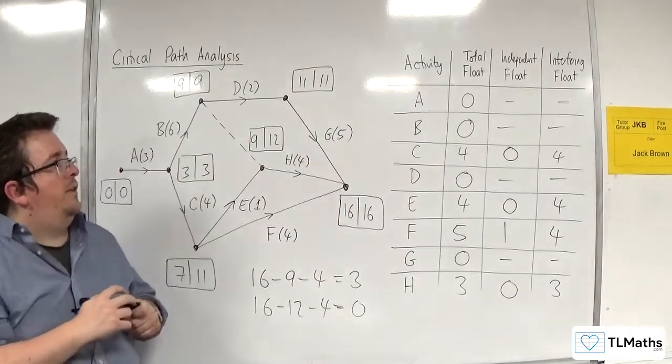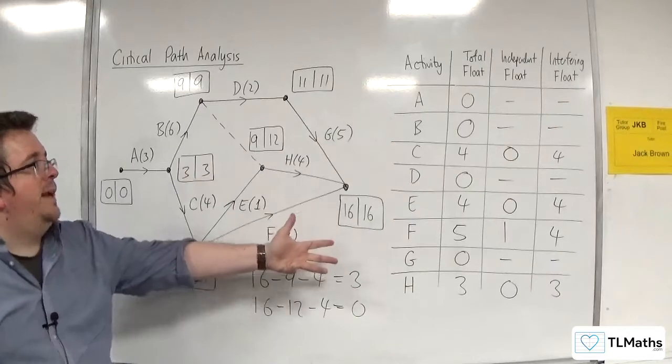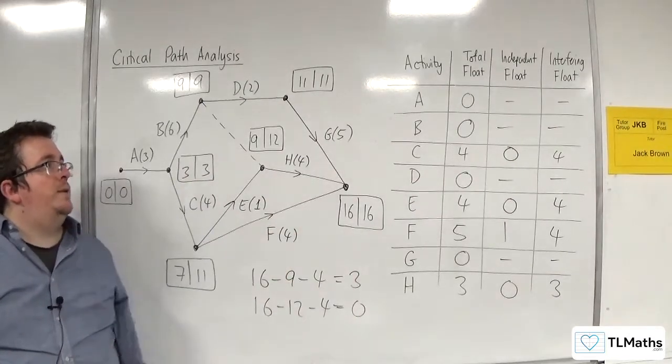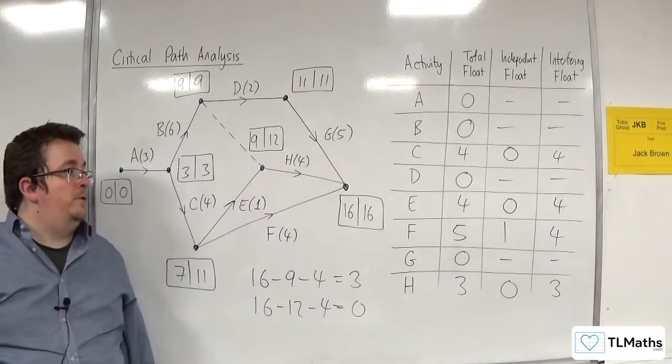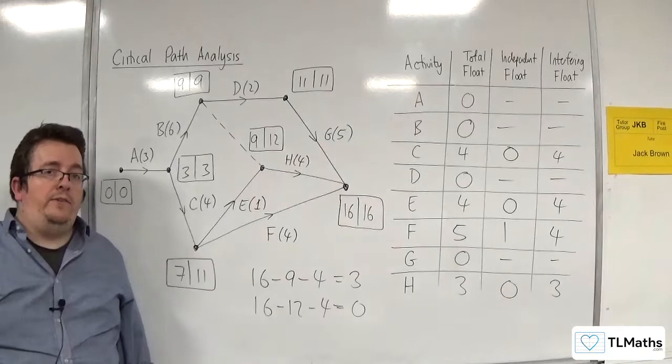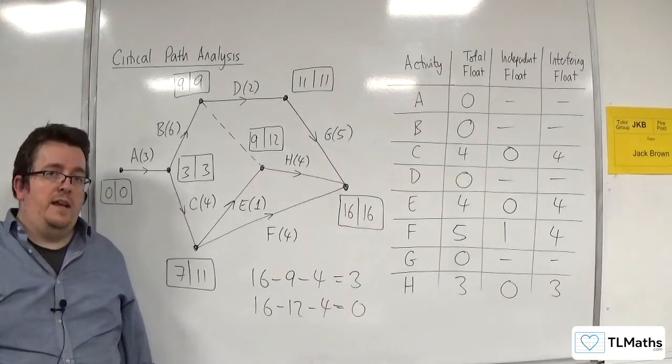And so this is how we can calculate the total float, independent float, and interfering float for all of the activities in an activity network.